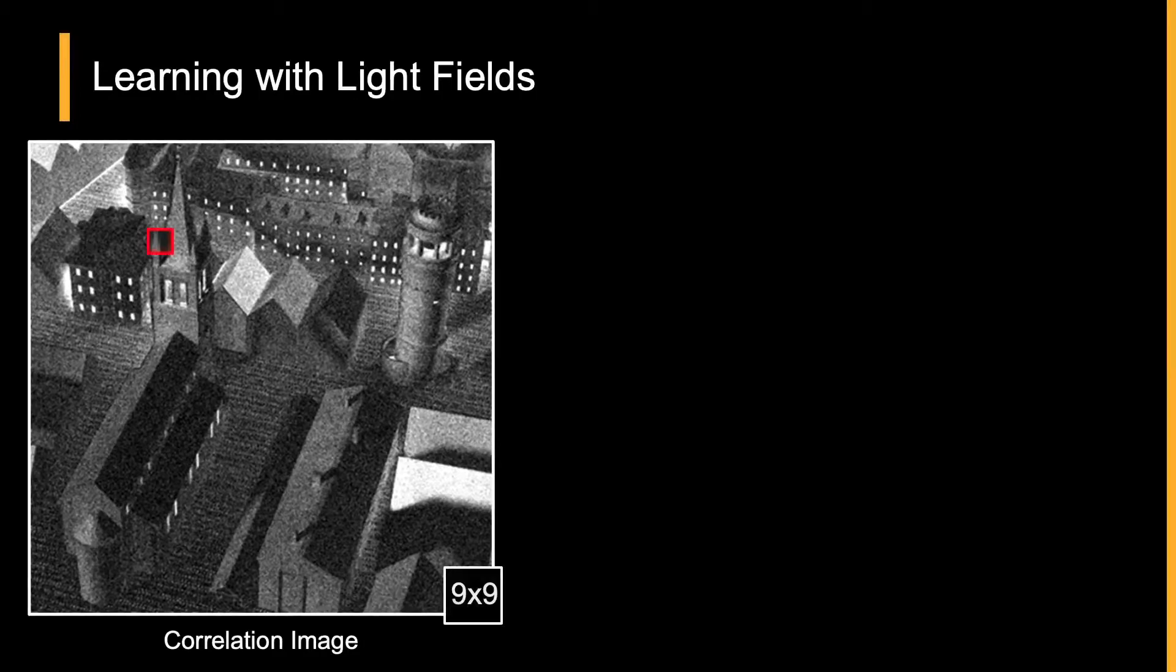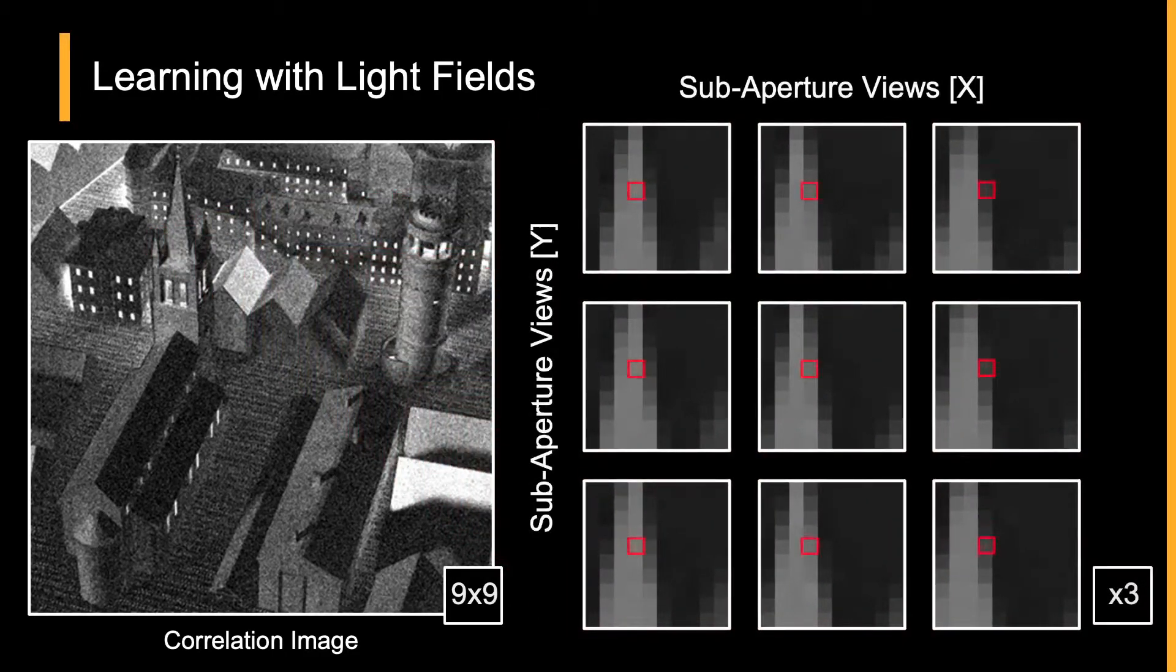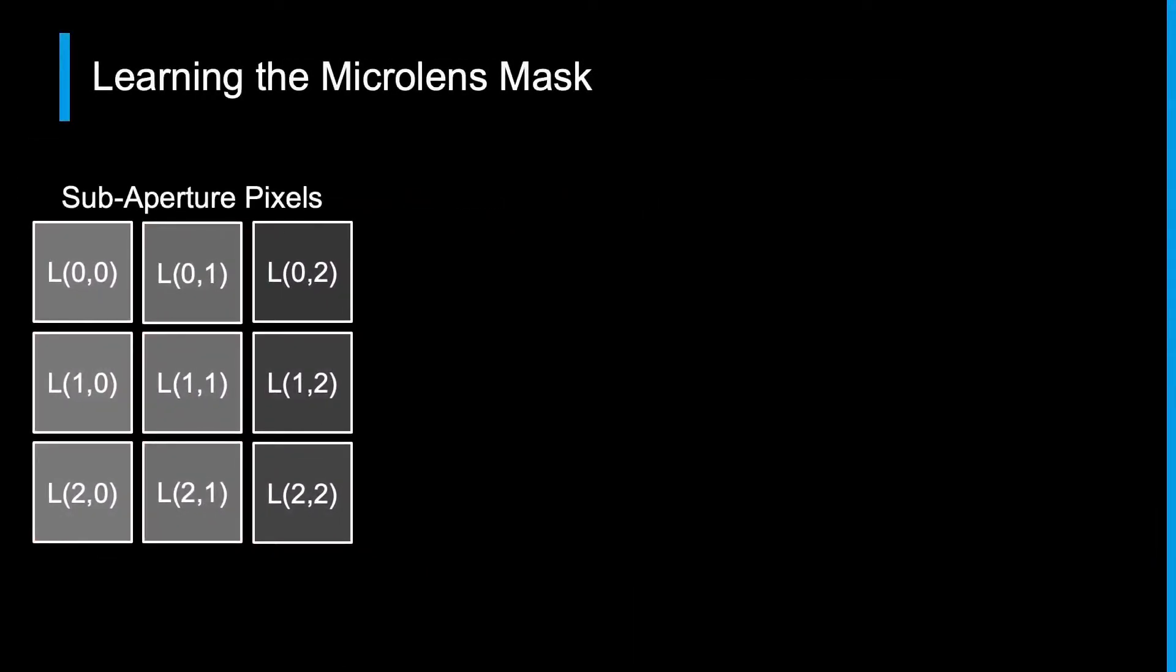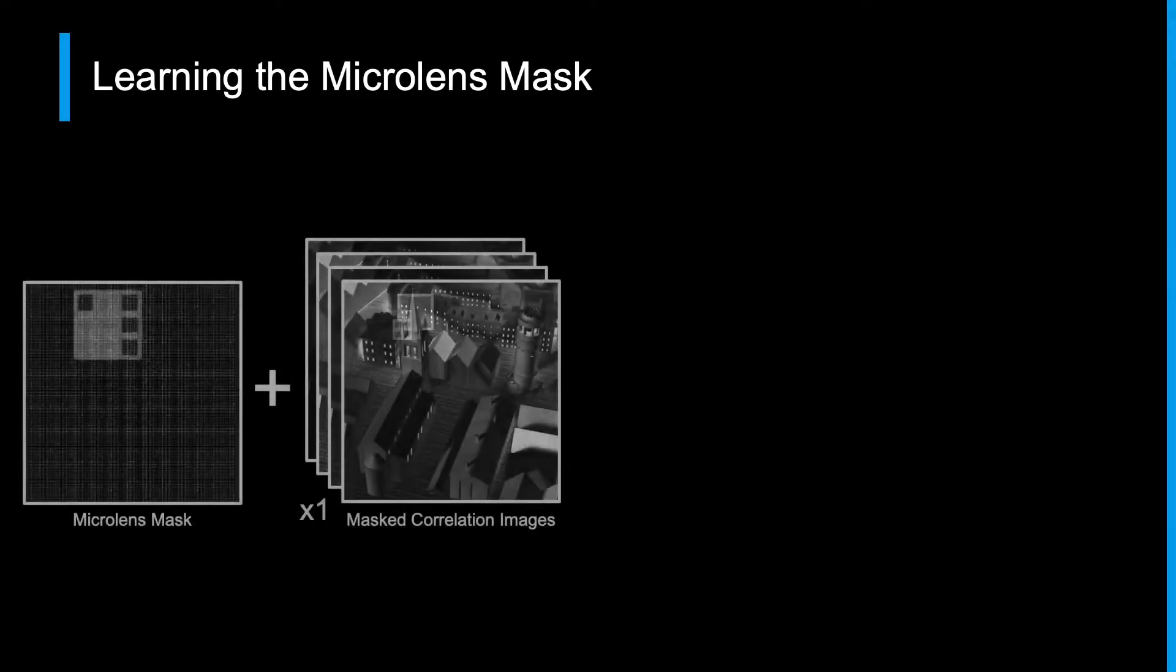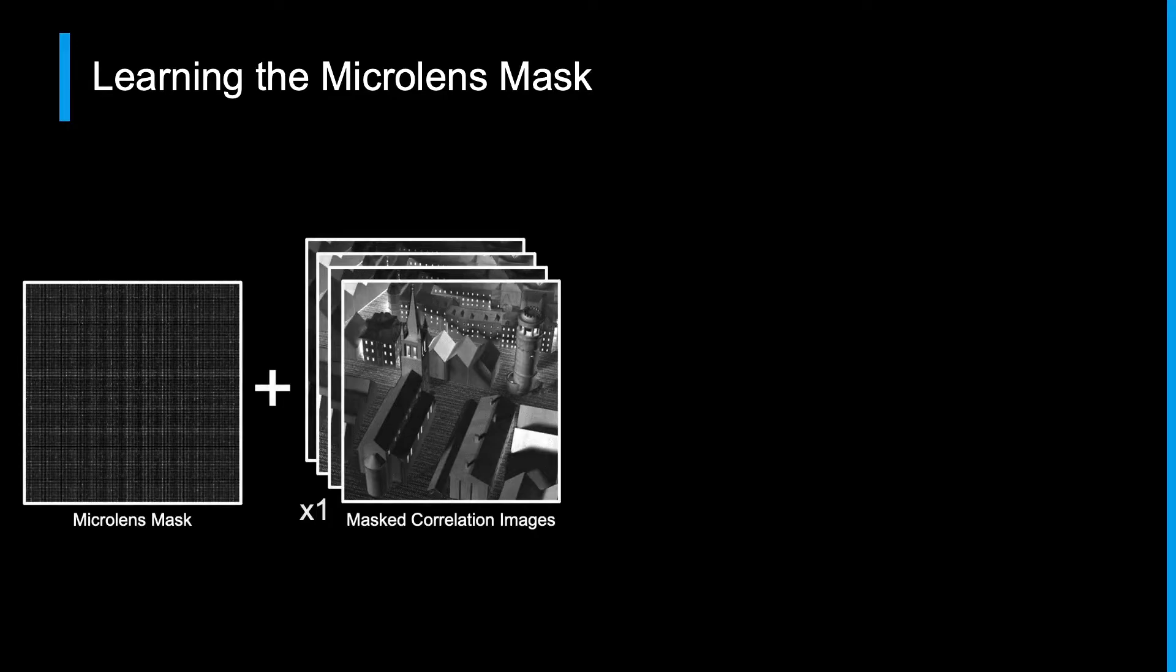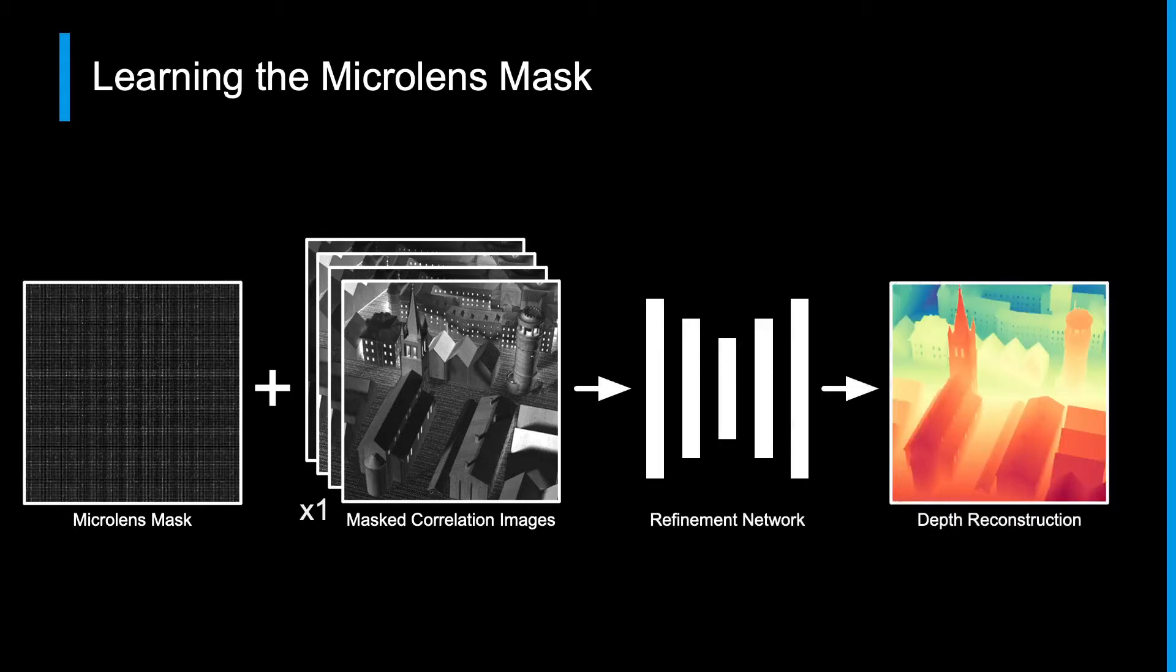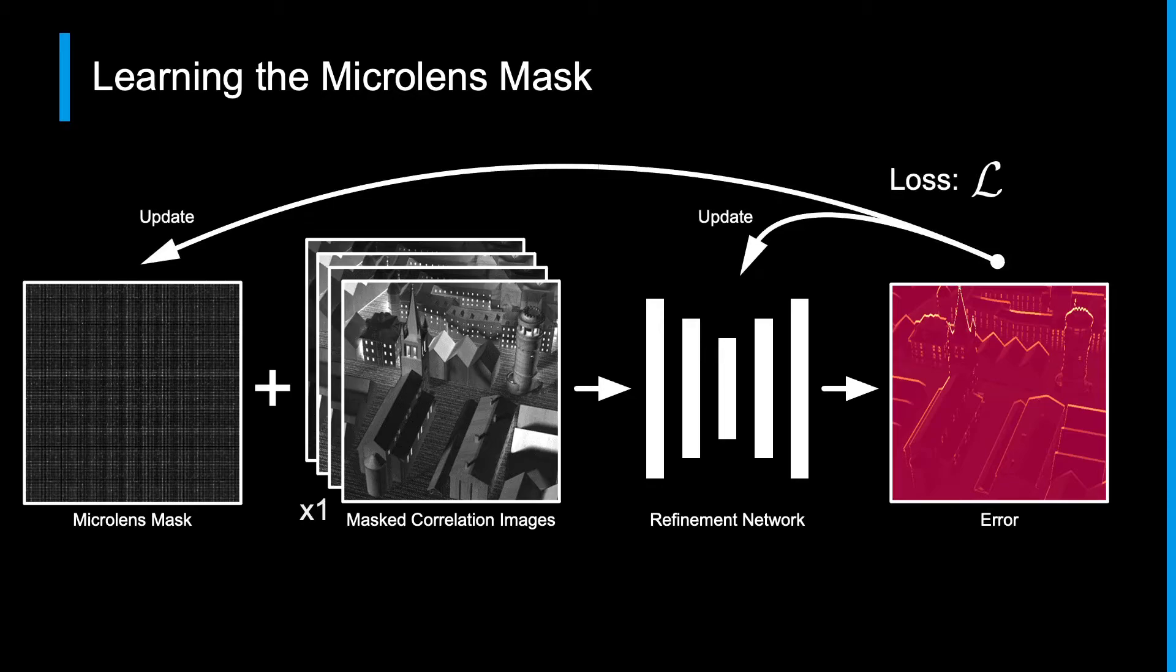Zooming into this correlation image stack, we can observe the pixel masking process. As we multiply our sub-aperture pixels by a mask array, we sum them to produce a mask pixel. Zooming back out, we pass this mask array and the mask correlation images into a convolutional refinement network, which outputs a decoded depth reconstruction. Calculating our error with respect to the ground truth light field depth, we can propagate this loss back through the network and to the mask pattern, jointly updating both.